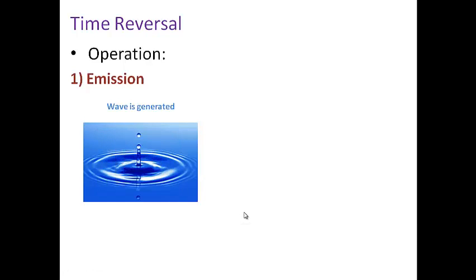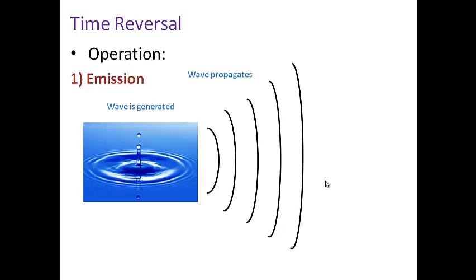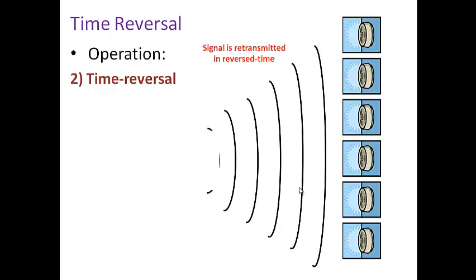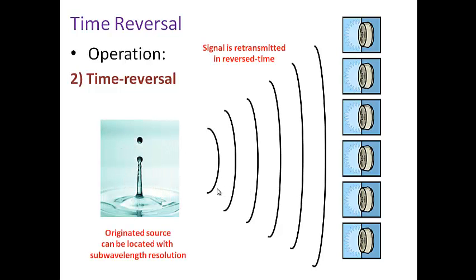Time reversal consists of the following: imagine we have a wave that is generated and propagates. We capture this wave with several receivers, take the signal we received, reverse the time, and transmit from these sensors. What we obtain is the same source, but we can locate it with sub-wavelength resolution.